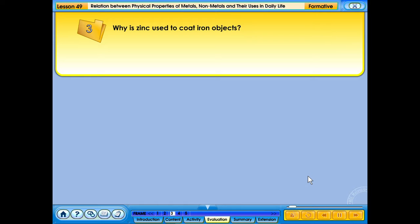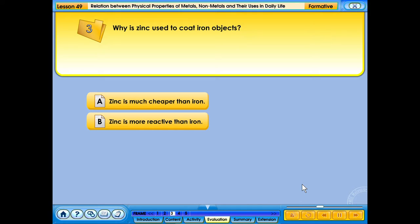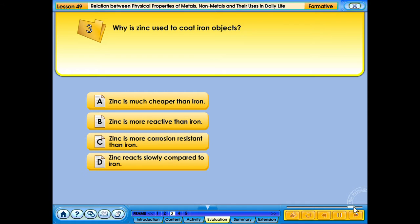Your answer is correct. Why is zinc used to coat iron objects? A. Zinc is much cheaper than iron. B. Zinc is more reactive than iron. C. Zinc is more corrosion resistant than iron. D. Zinc reacts slowly compared to iron. B. Zinc is more reactive than iron. Your answer is correct.